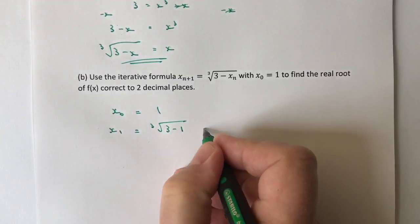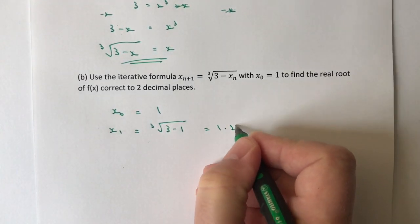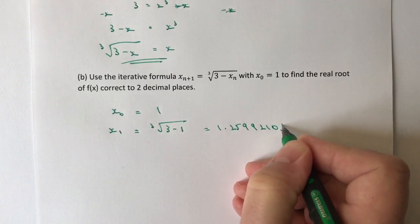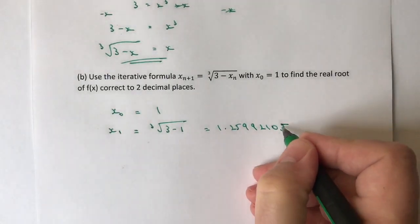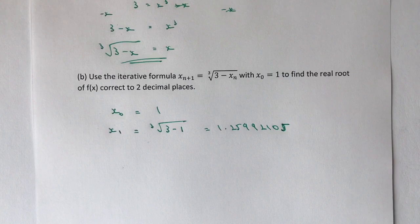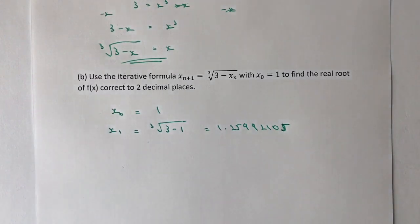That's going to give you 1.25992105. You will need a scientific calculator for this, and it's much easier to do these sorts of questions using the formula, because we've got to get this correct to two decimal places and we're incrementally changing our results.